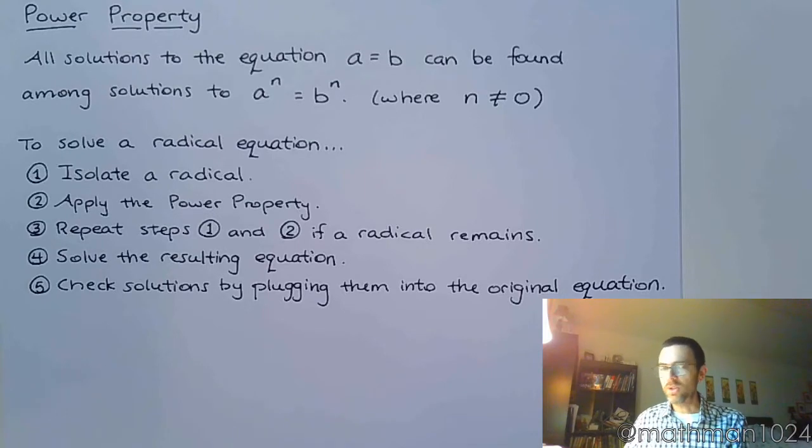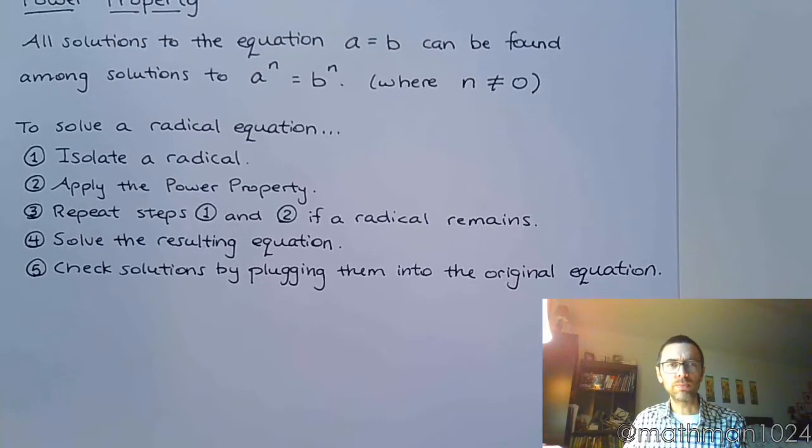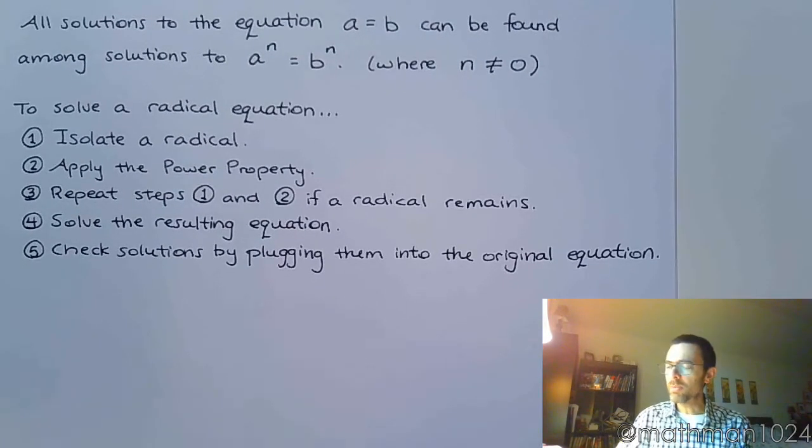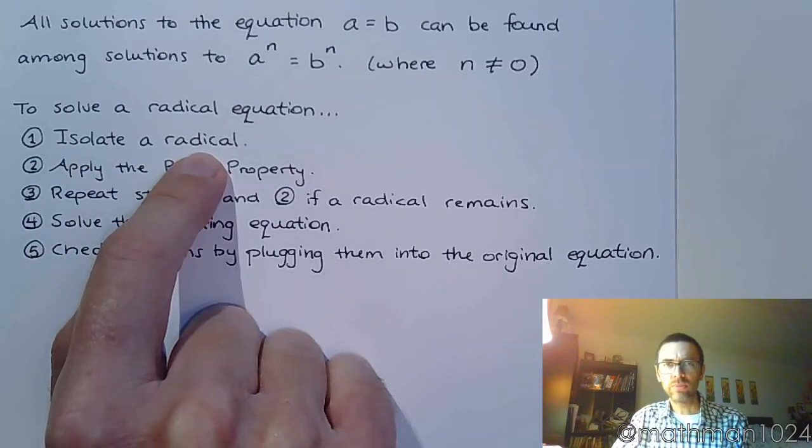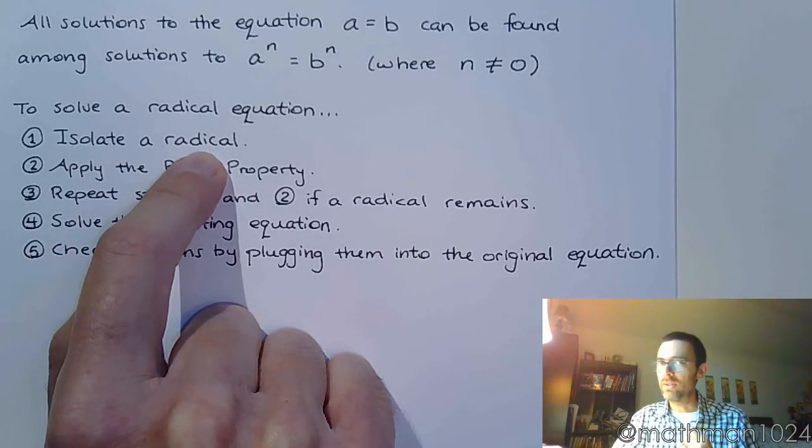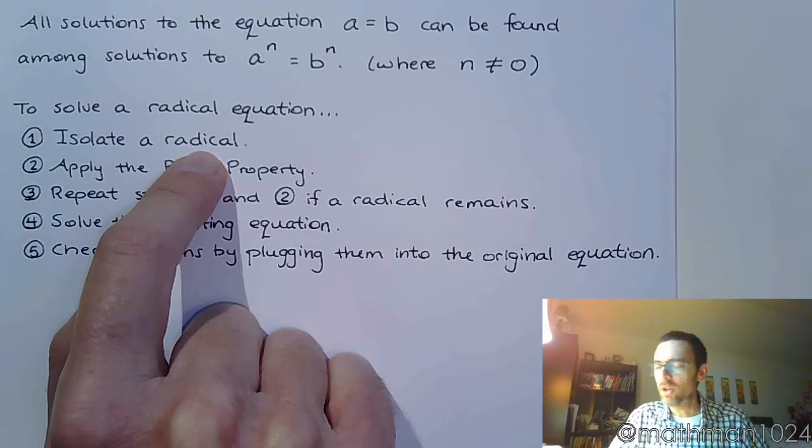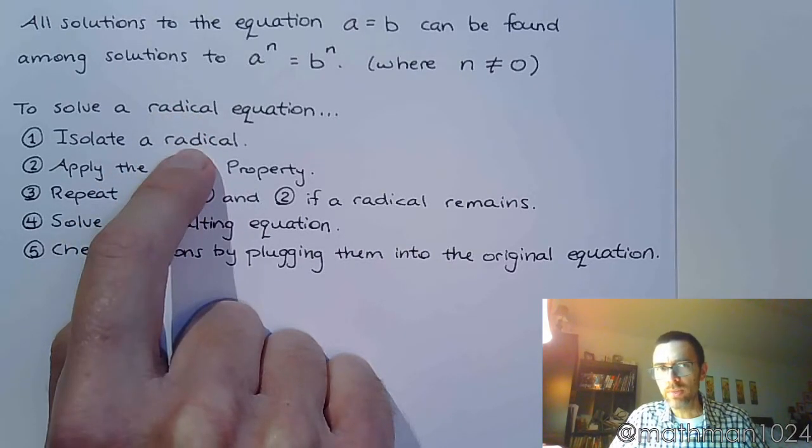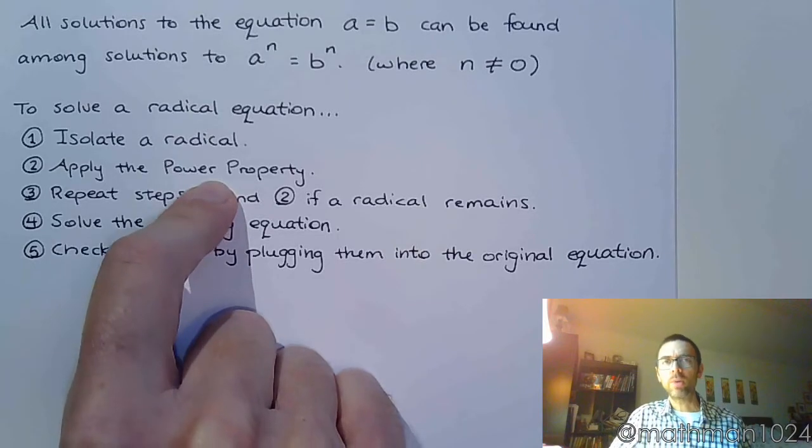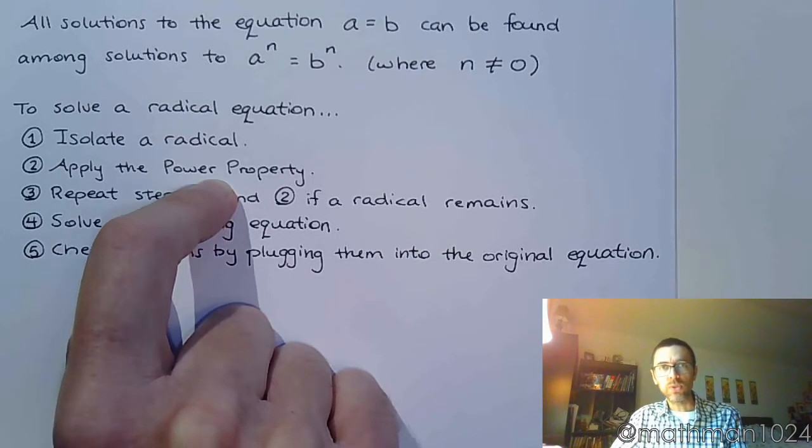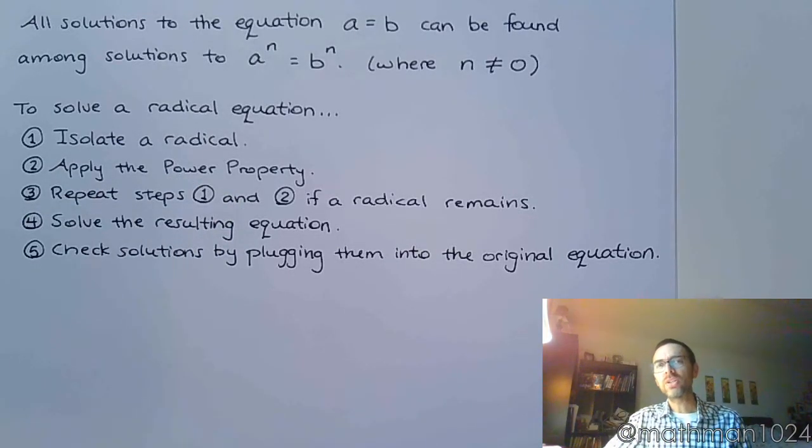In order for us to solve a radical equation, here are the five steps that we go through. The first step is to isolate a radical - I say isolate a, not the radical, because sometimes you have more than one radical in the equation. Once you have the radical by itself, you're going to apply the power property. You are going to be the one who chooses what power to raise each side of the equation to, and you know what that power is going to be simply by looking at the index of the radical.